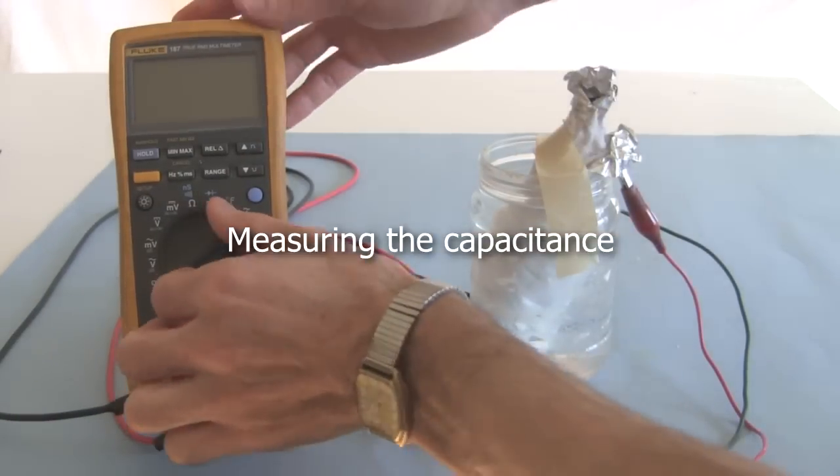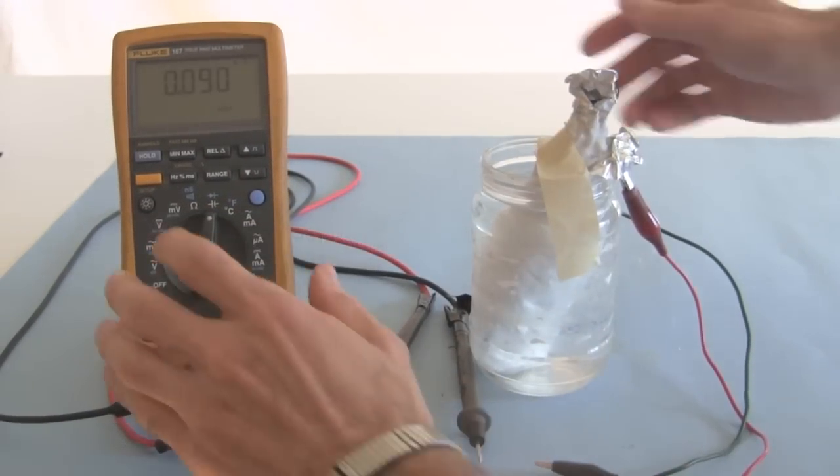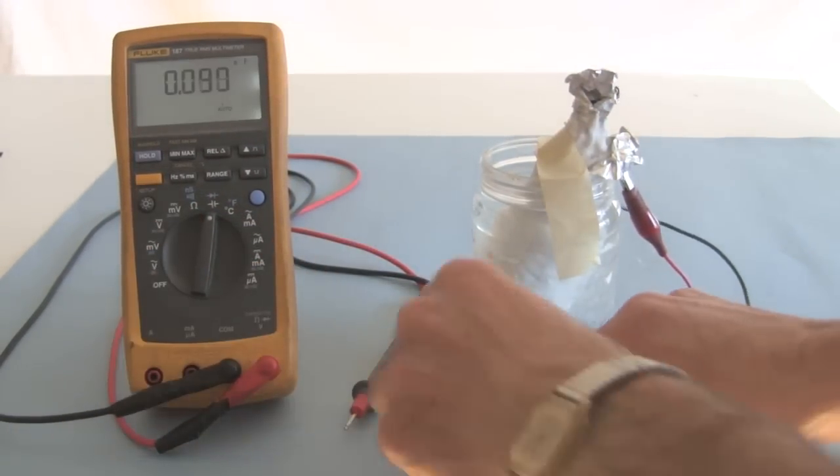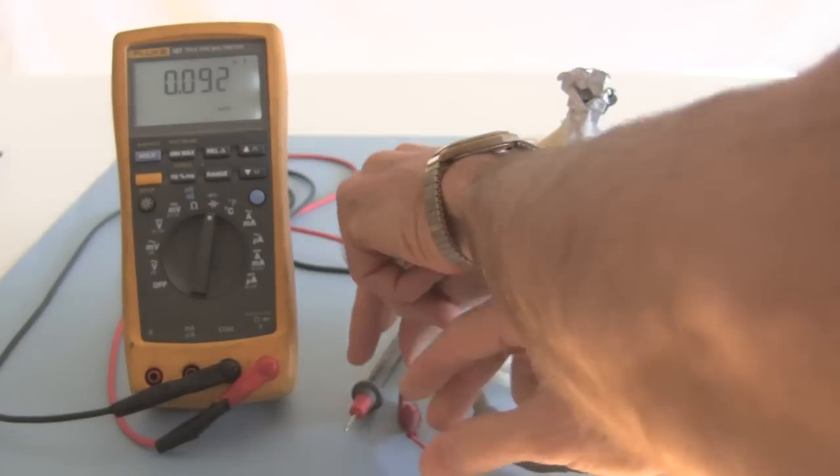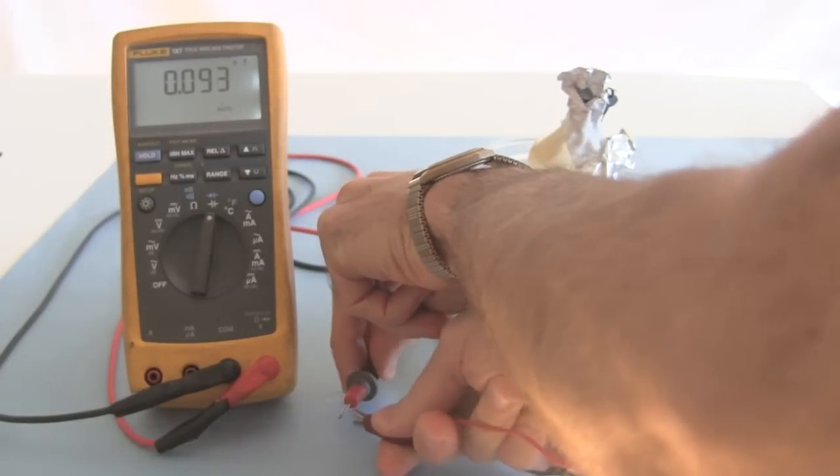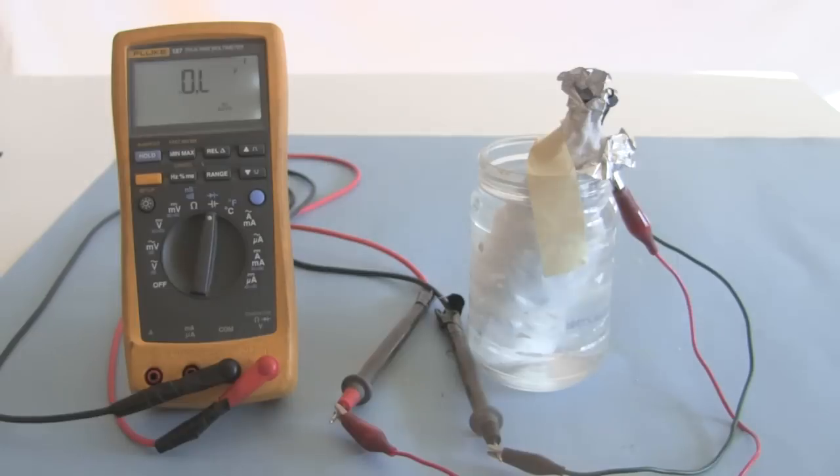And then, of course, to measure the capacitance. I'll put it on the capacitance scale of my meter. Let it settle for a bit. And we see it's around the mid-500s microfarads. So, 560s or something.